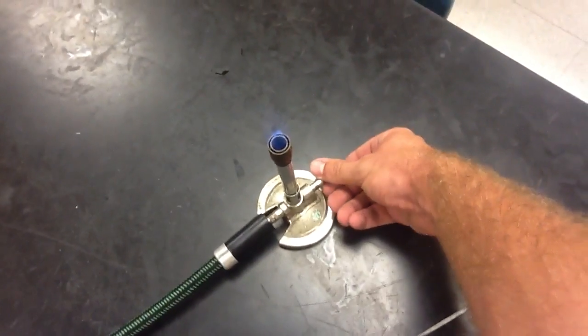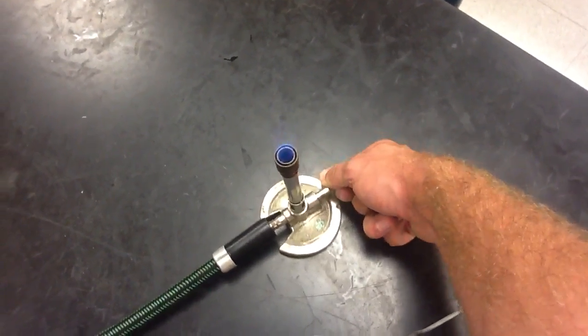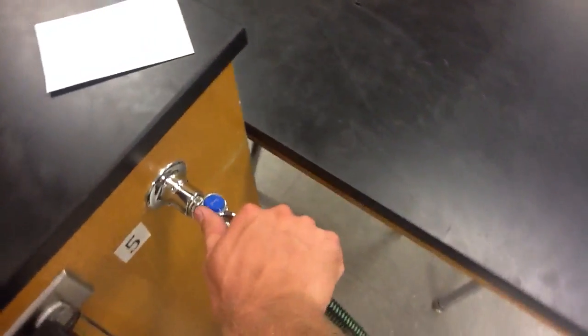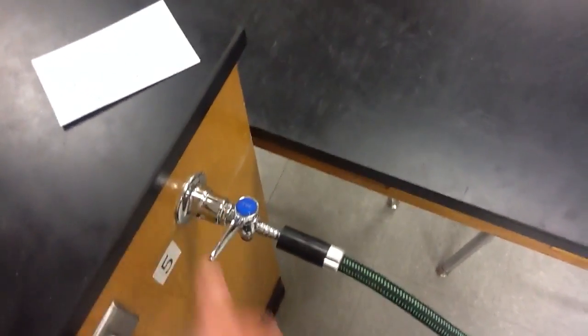When you're ready to turn it off, you can go ahead and just turn off the valve here. Wrong way. Turn it off there. And it's off. Then you can turn the gas off there. Alright, good luck.